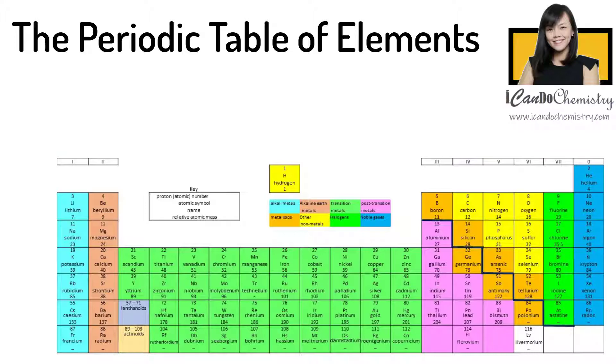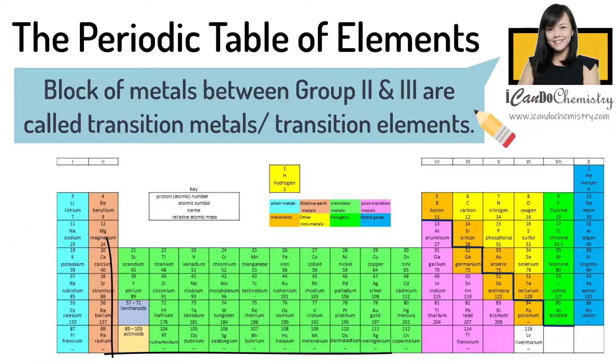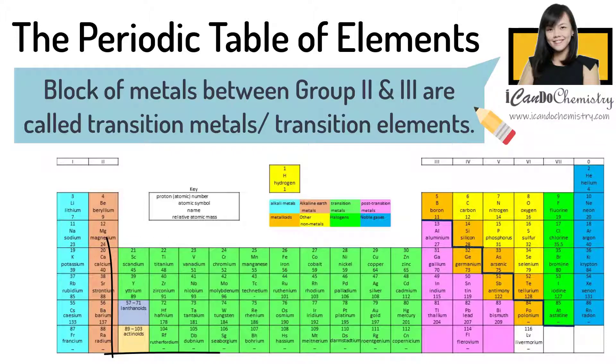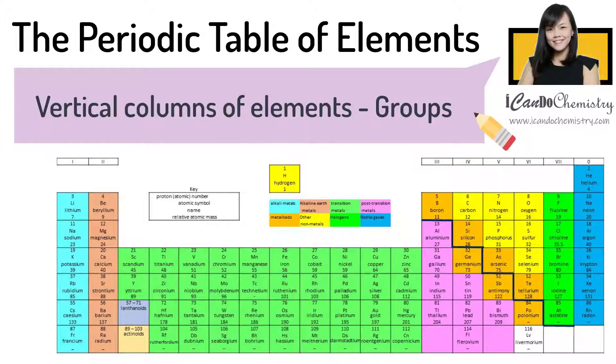Now you realize that a period is a horizontal row of elements. The periodic table consists of 7 periods of elements. Now in the middle is a block of metals which we call the transition elements. So the horizontal rows of elements in the periodic table are called periods. The vertical columns of elements in the periodic table are called groups.